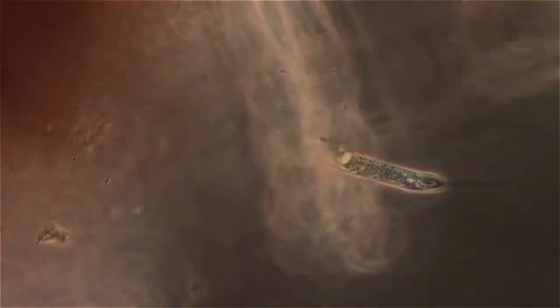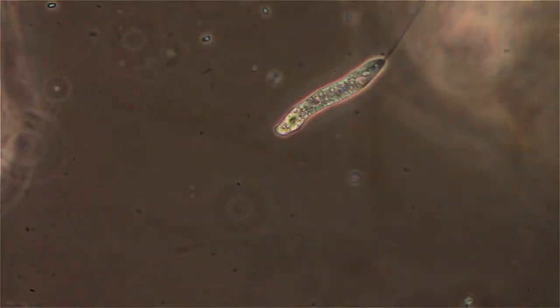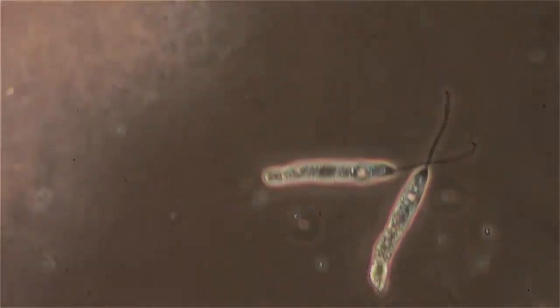There's colony after colony of bdelloid-type rotifer and packs of peronema swimming around.